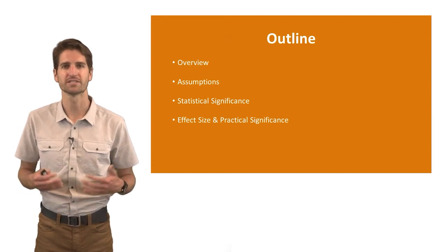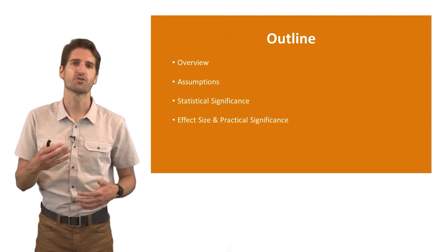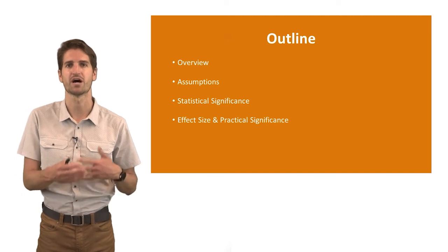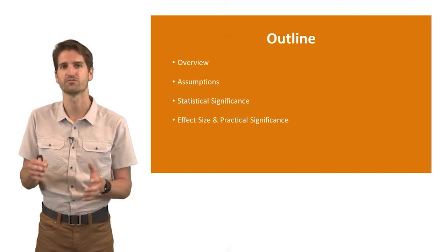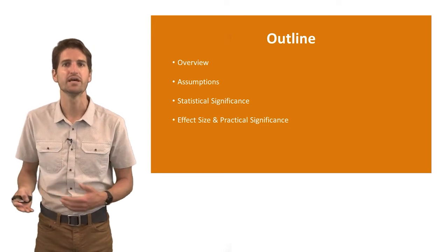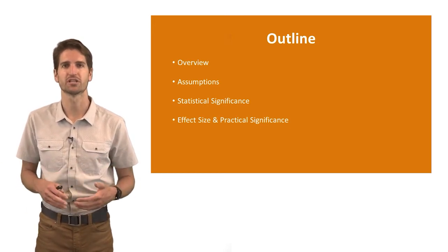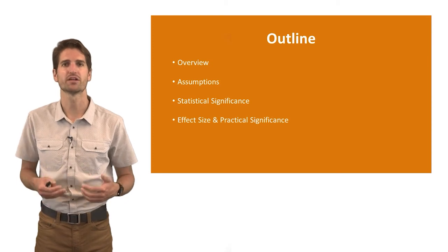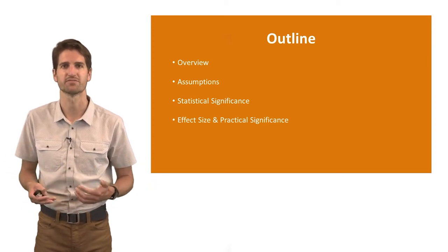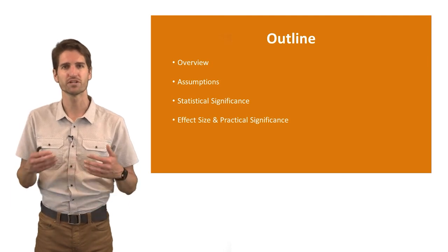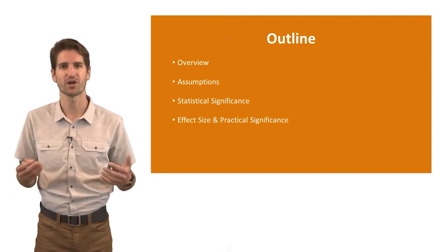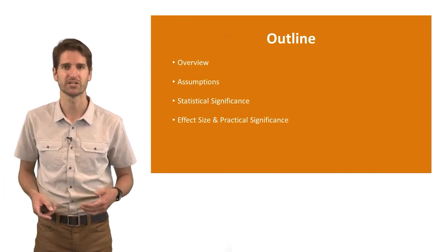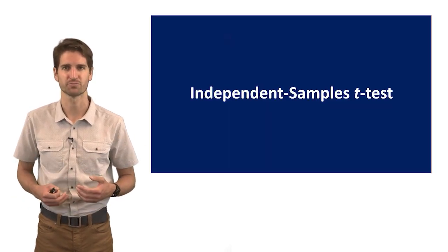To sum up this lecture on independent samples t-tests: we started with an overview of what an independent samples t-test is — assessing the association between a nominal predictor and a continuous outcome variable. We then described the two assumptions: univariate normal distribution and equal variances. We covered statistical significance and walked through a training evaluation example. Finally, we discussed why effect size and practical significance, particularly Cohen's d, are important to consider alongside statistical significance.